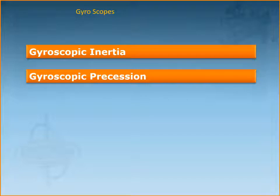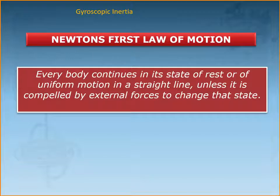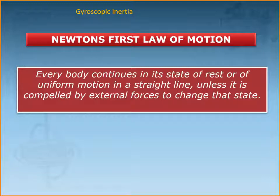The first property we'll be talking about is gyroscopic inertia, and the second one will be gyroscopic precession. Gyroscopic inertia is based on Newton's first law of motion, which states that everybody continues in its state of rest or of uniform motion in a straight line unless it is compelled by external forces to change that state.